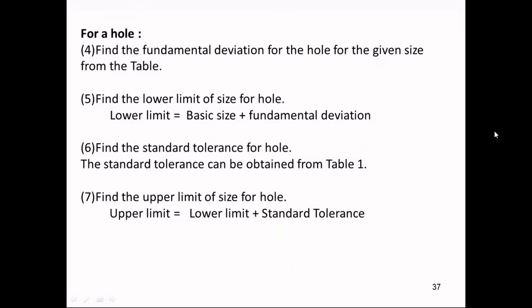The next step will be the deviations. Based on which type of hole is provided, we can identify it. Find the fundamental deviation for the hole — the fundamental deviation will depend on whether it is type A, B, C up to ZC, whichever is provided — and we can get that value from the table. Likewise, find the limits of sizes — that is, lower limit and upper limit — for both hole and shaft. It will be basic size plus or minus standard tolerance, and from the table I will show you, we can get the hole dimensions.